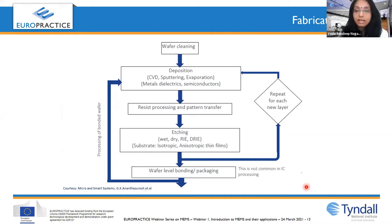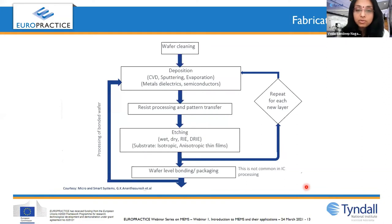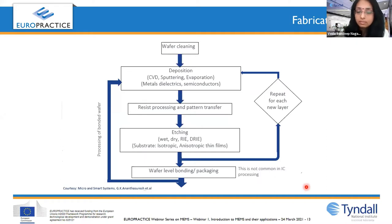Once a layer is deposited, you pattern it to your device application requirement using lithography. There are types of lithography depending on the minimum feature size needed. Lithography requires resist coating done by spin coating. After patterning, you remove the unwanted material through the etching procedure — dry etch, reactive ion etching, or deep reactive ion etching — depending on the substrate and material. It is a very important step: we want only the unwanted part etched without damaging the device layer.